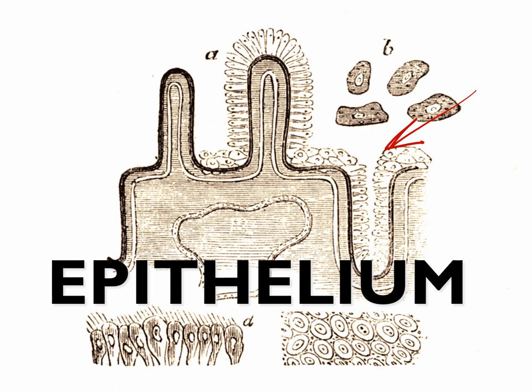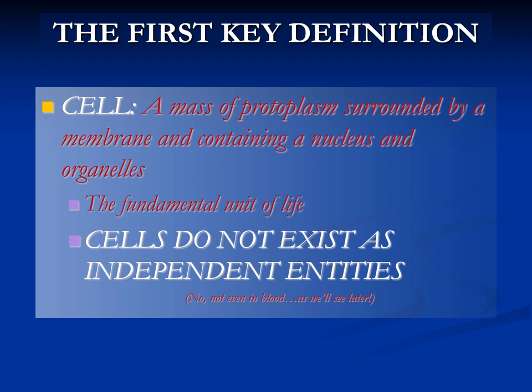In this lecture, I'm going to talk specifically about the epithelia. As you remember from the last lecture, I talked about the first key of definition, which is the cell — a mass of protoplasm surrounded by a membrane containing nucleus and organelles. The cell is the fundamental unit of life and the smallest unit that exists. Cells don't exist as independent entities; cells will always be found as part of the tissues.